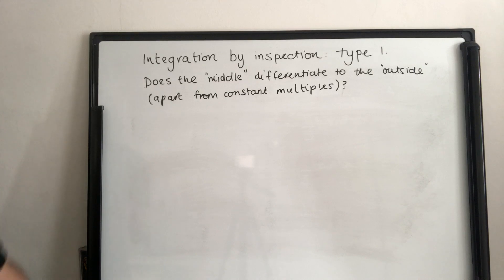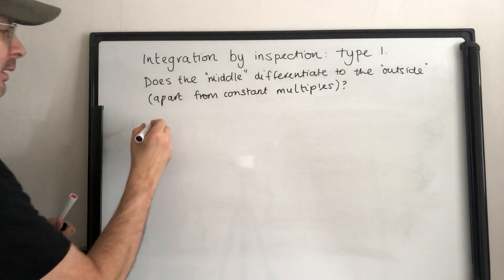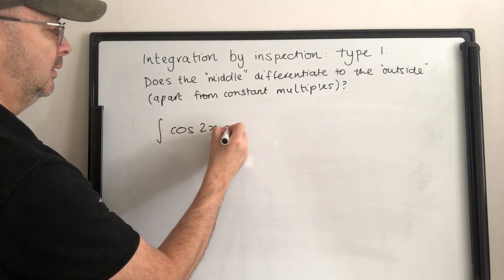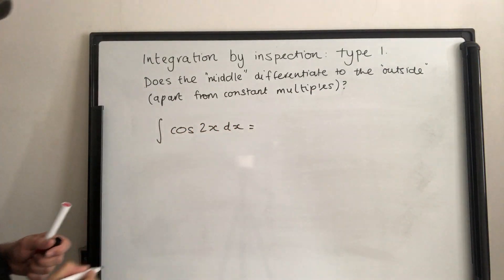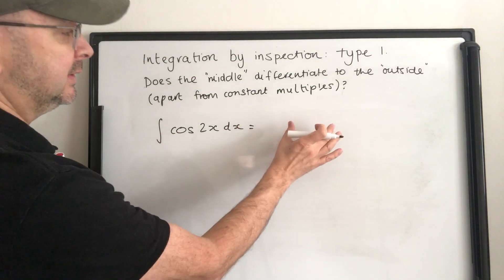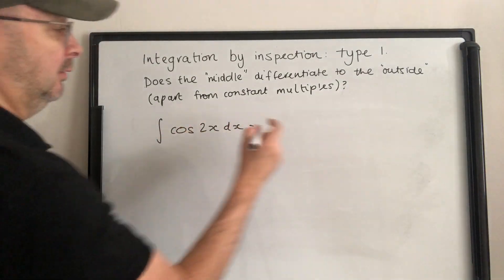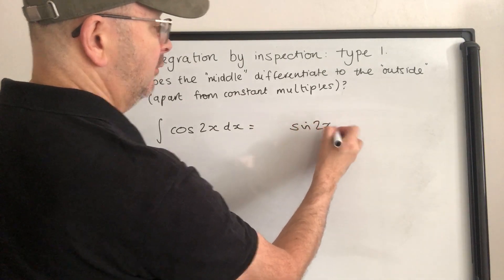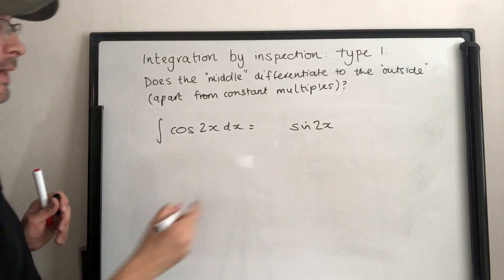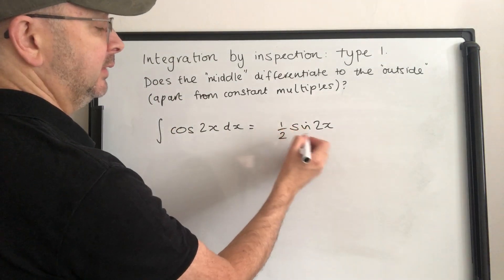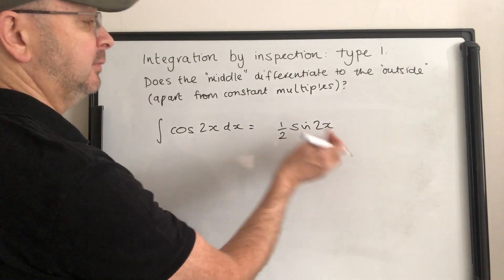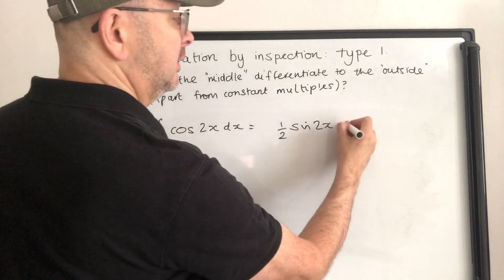For some fairly easy integrations: if we've got cos of 2x, we know sin differentiates to cos, so we're going to do sin of 2x. The middle, 2x, differentiates to 2 — we can adjust for that by calling it a half. So sin differentiates to cos of 2x, multiply by the derivative of 2x which is 2, get rid of it. Answer: one half sin of 2x, plus c. Similarly for cos of 3x — cos differentiates to minus sin, so we need to account for the negative. Then 3x differentiates to 3; we want a third to cancel it. Answer: one third sin of 3x, plus c.